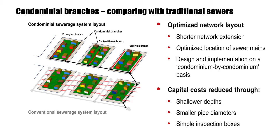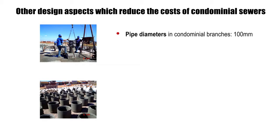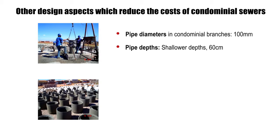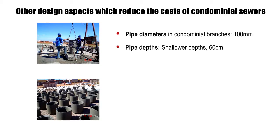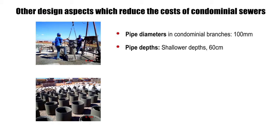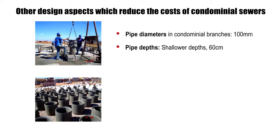Together with shallower pipe depths, smaller pipe diameters, and the use of simple inspection boxes instead of manholes, capital costs can be consequently reduced. Pipe diameters in condominial branches are generally minimized — hydraulic conditions permit a diameter of 100 mm. Shallower depths can be used when sewers are laid in front yards, backyards, or under sidewalks, avoiding traffic-bearing sites to achieve depths as little as 60 cm, reducing the amount of excavation required.